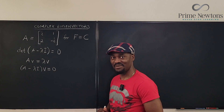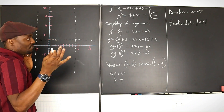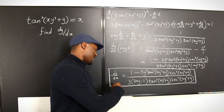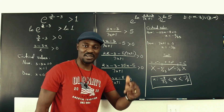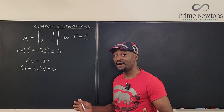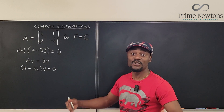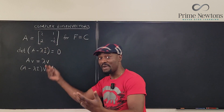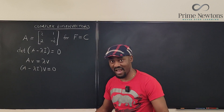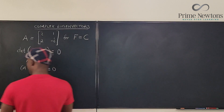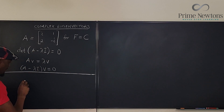So let's get into the video. Like I said, the first thing to find will be the eigenvalues. There will definitely be two eigenvalues because it is a 2x2 matrix. If it were a 3x3 matrix, there would be three eigenvalues. So let's go straight to the work.